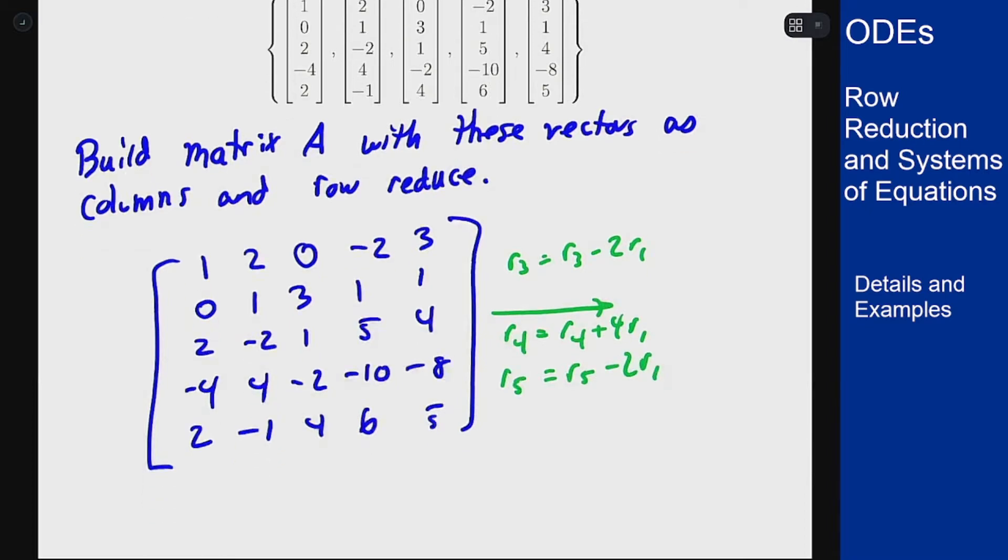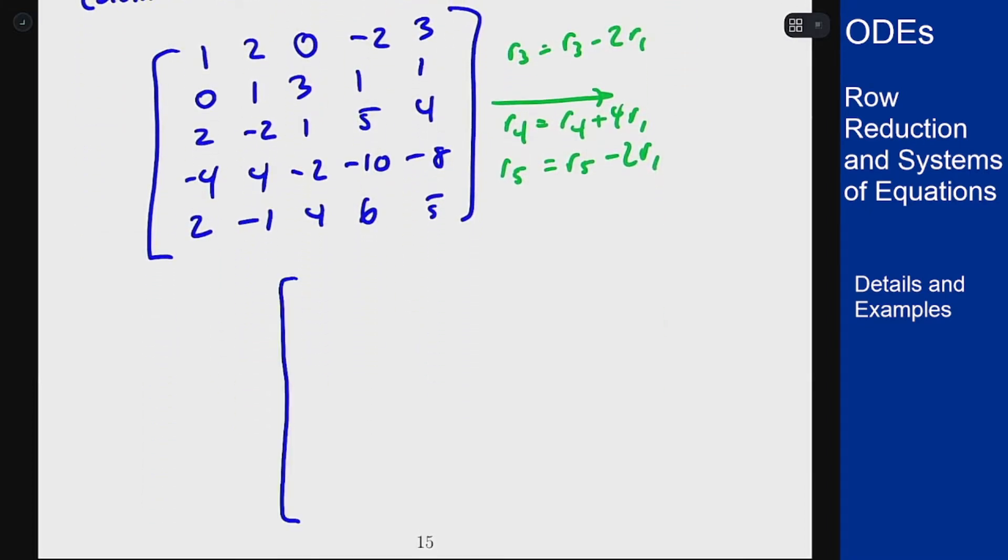So if I do that, my first row does not change. My second row also doesn't change because I had a 0 in that spot. For the third row I'm subtracting 2 copies of the first row.